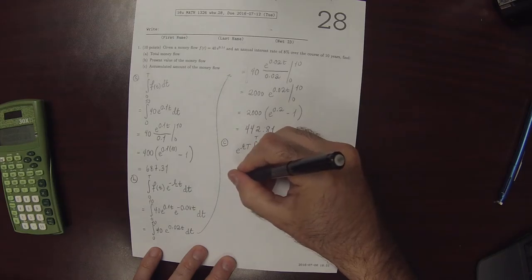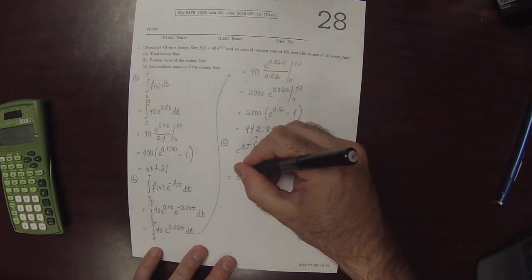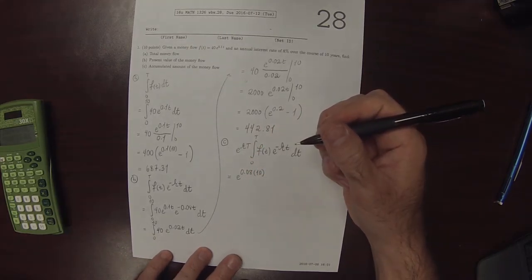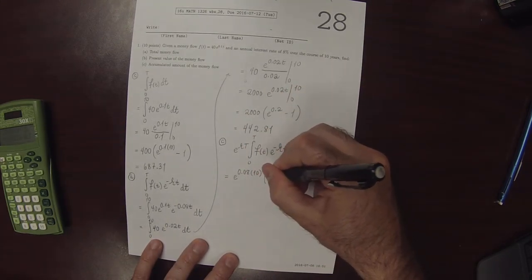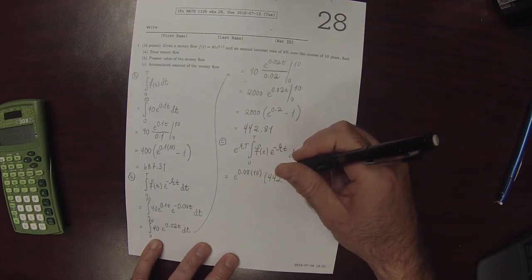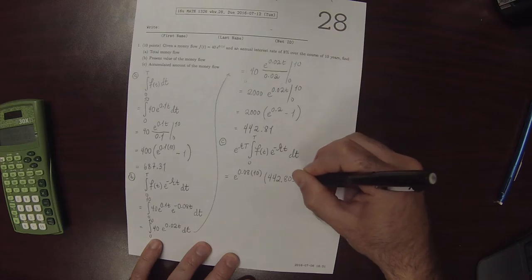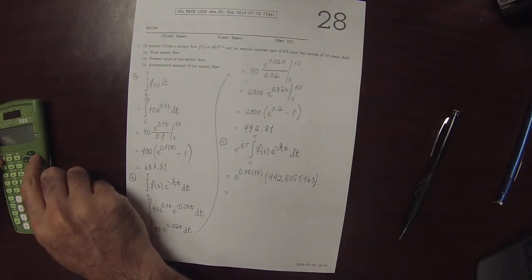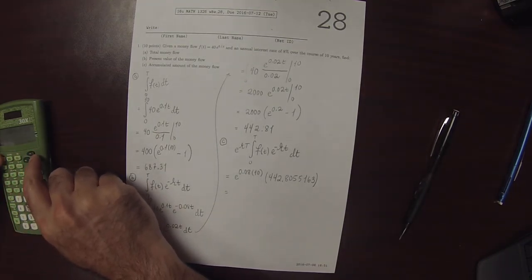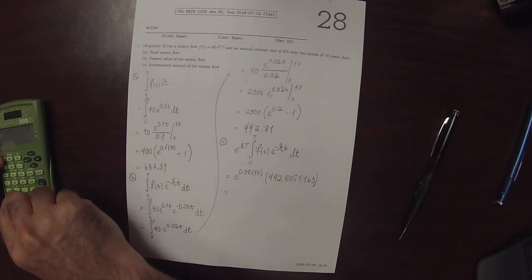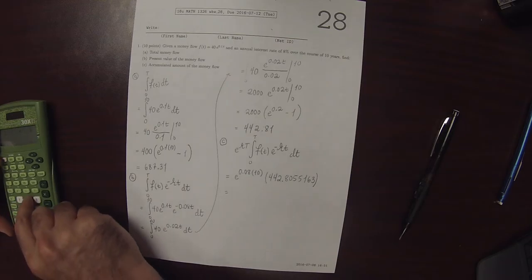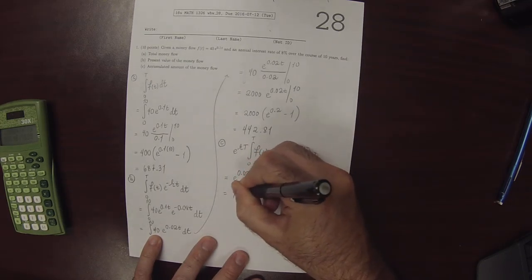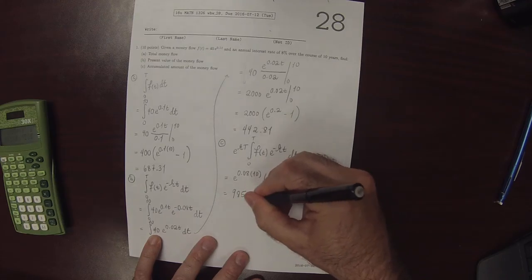So that is exponential of 0.08 times 10, and then this previous number 442.805163, that's how many digits my calculator is showing. And that value is, to the nearest cent, 985.41.